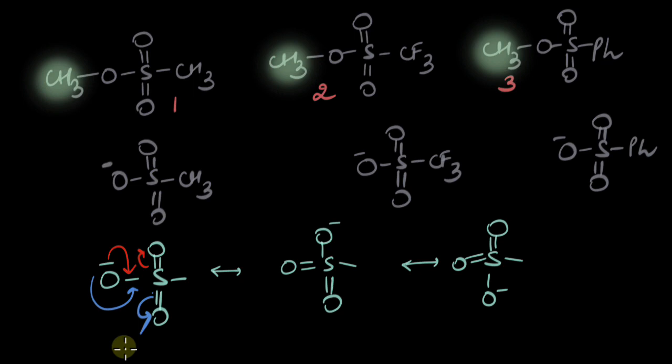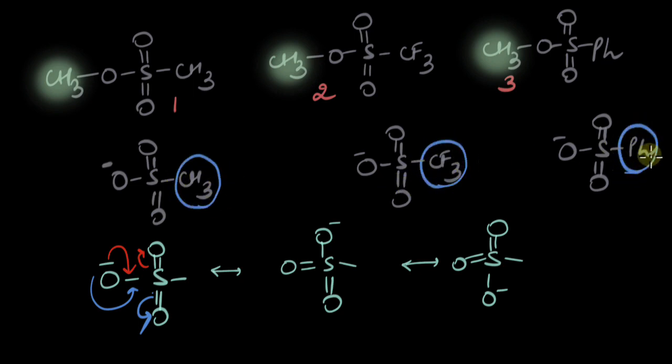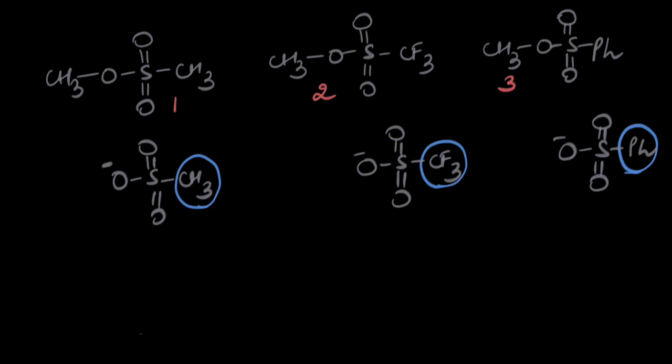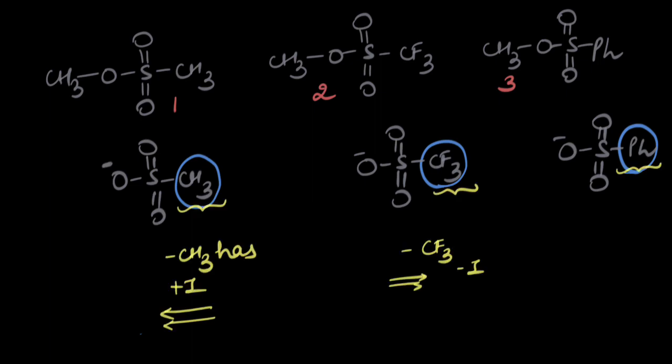So this negative gets stabilized via resonance in each case and in a similar manner. How do I compare the stability of these leaving groups then? We think about the attached groups in each case. In the first case, the CH3 group attached has a donating effect — the plus I effect — and it pushes electron density towards this group via the sigma bond.